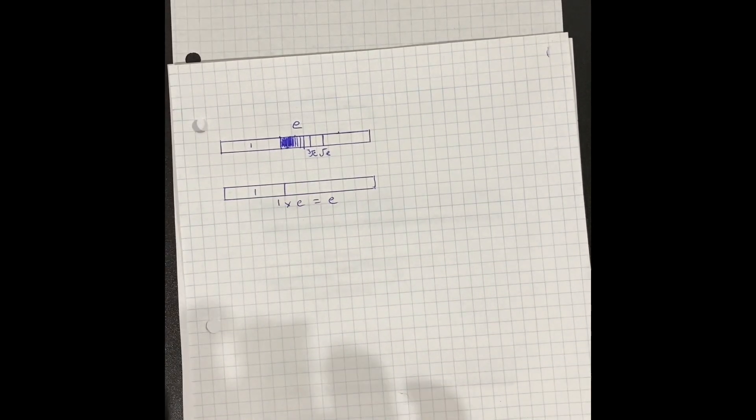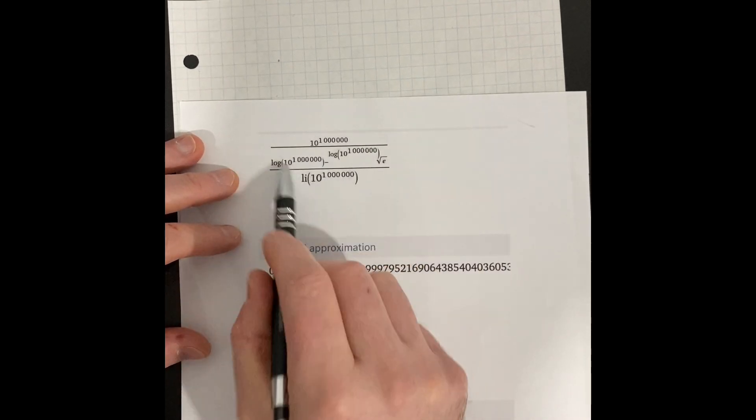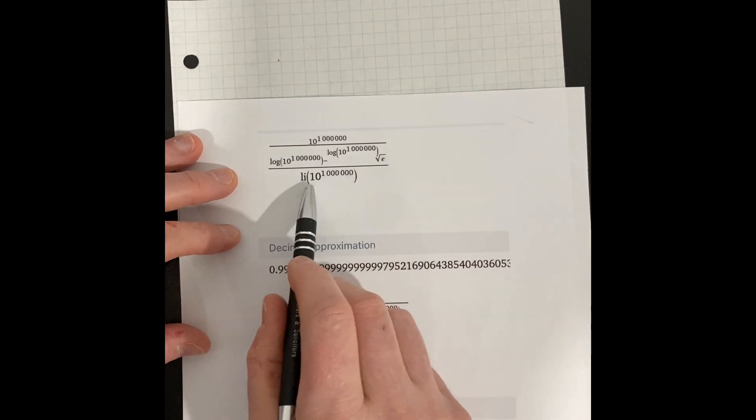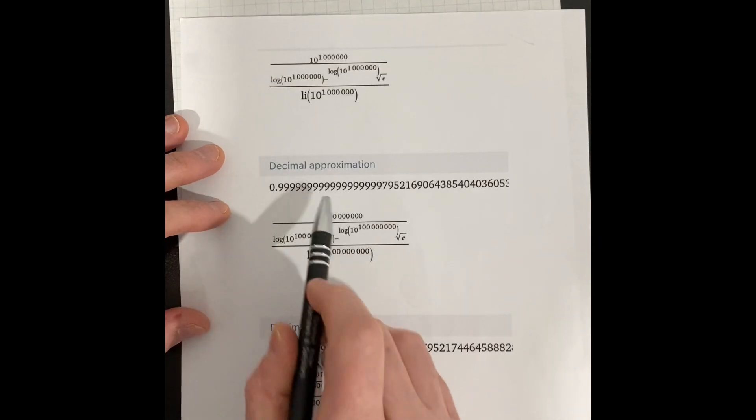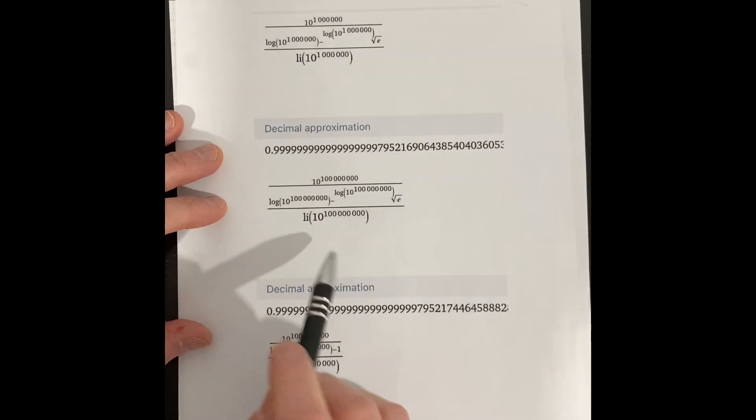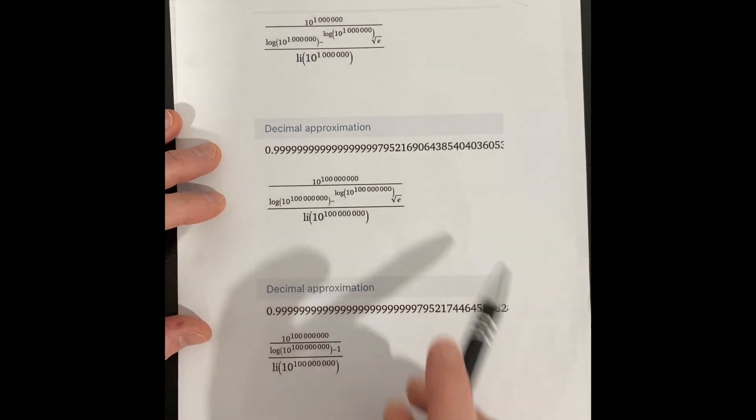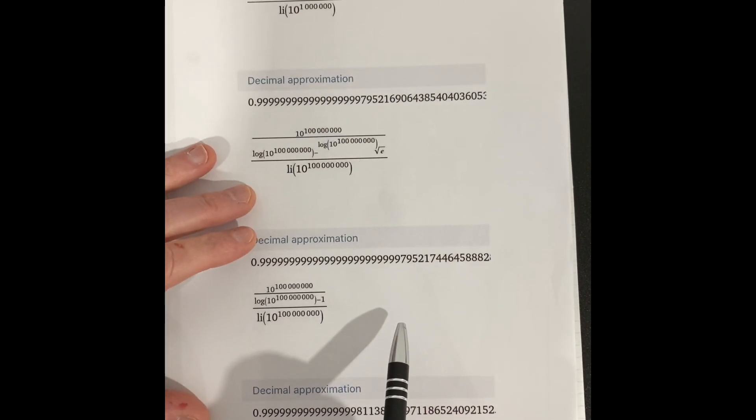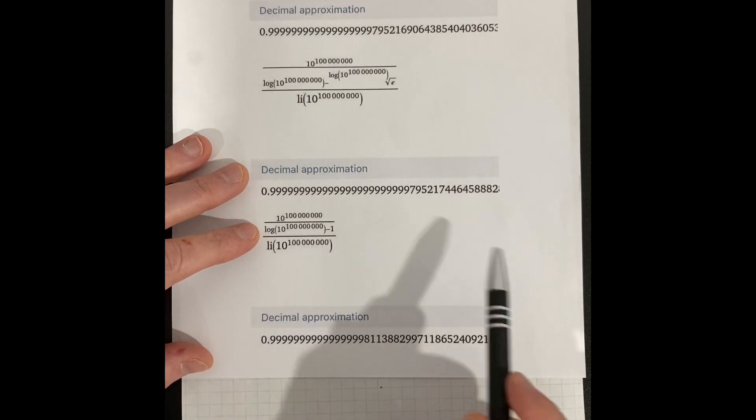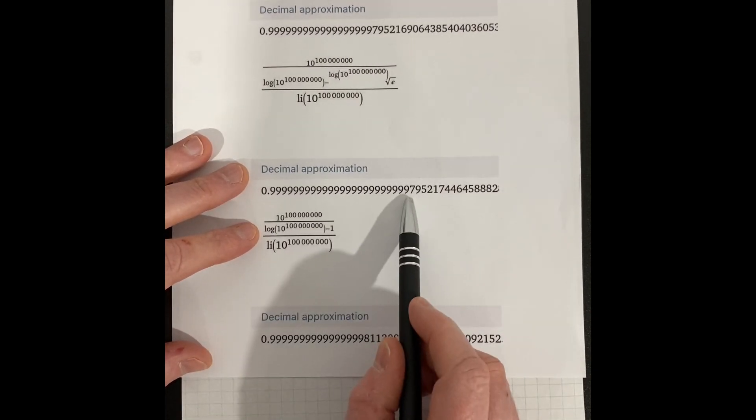So just to show you how well it works. Here is the equation of 10 to the 1 million divided by Li of the same. That's how close it is. Here it is to this big number. As you can see, it's just getting closer and closer. And here is just minus 1 instead of my equation. You can see the 9s stop here. My 9s go to there.